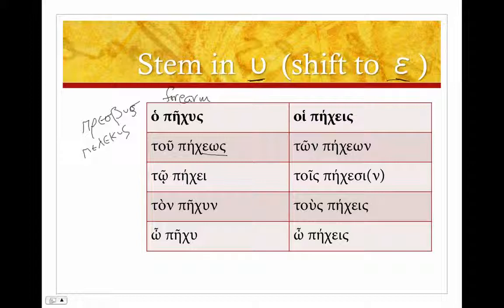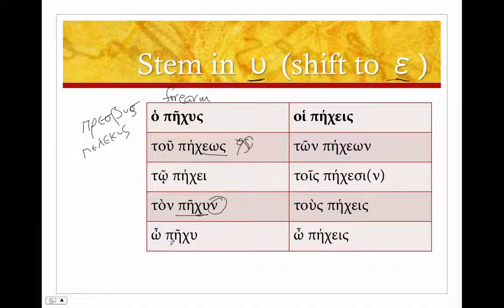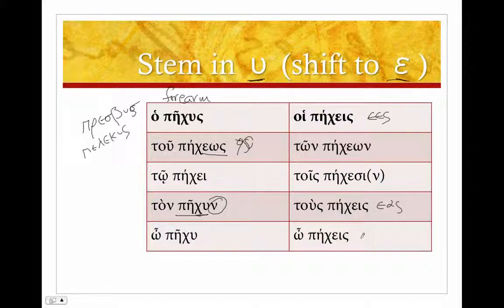Quantitative metathesis gives us the 'eos' instead of 'os', and then we move on just like we did with 'polis'. So: 'pechaos', 'pechai', 'pechun' — the 'nu' in the accusative — 'pechu' in the vocative, which is the stem. 'Pecheis' — a contraction of 'e+es' — 'pecheon', 'pechesi', and 'pecheis' — a contraction of 'e+os'. Watch that genitive singular for a clue as to what's going on.